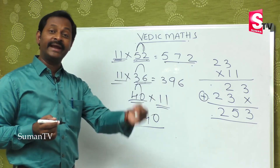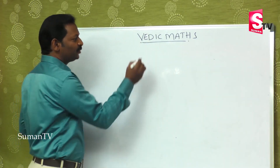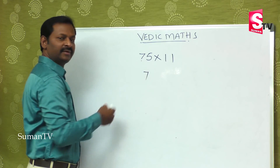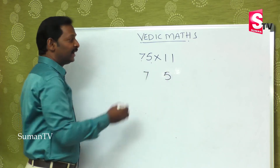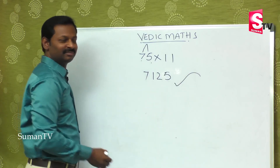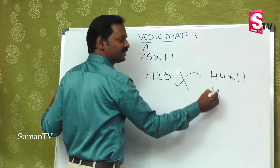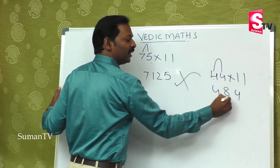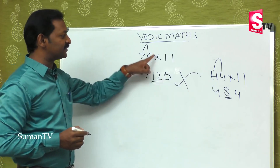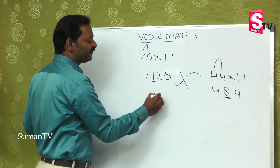How about 88, 96, or 75? Let's take 75 multiplied by 11. First digit is 7, last digit is 5. Add them: 7+5=12. But 12 is a 2-digit number, so you can't place it directly in the middle. You take the extra tens digit — the 1 — and add it to the left digit 7, giving 8. Then put 2 in the middle and keep 5 at the end. So 825 is the right answer.